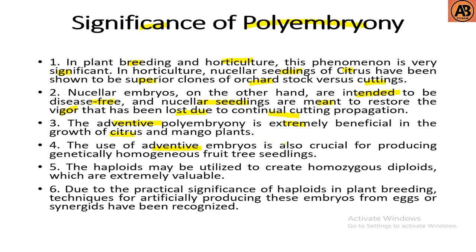The use of adventive embryos is also crucial for producing genetically homogeneous fruit tree seedlings. Haploids may be utilized to create homozygous diploids, which are extremely valuable. Due to the practical significance of haploids in plant breeding, techniques for artificially producing these embryos from eggs or synergids have been recognized.